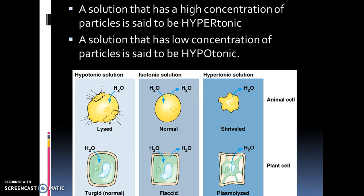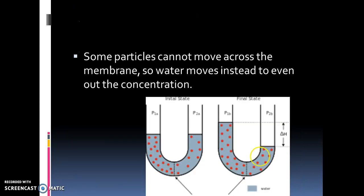A solution that has a high concentration of particles is said to be hypertonic. Hyper means high concentration, and hypo means low concentration. Looking at the previous example, the side with more particles would be hypertonic, and the other side would be hypotonic.